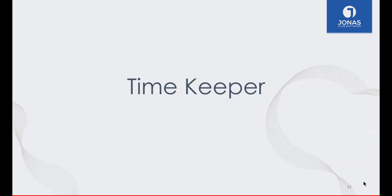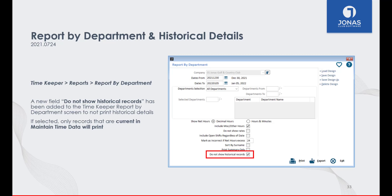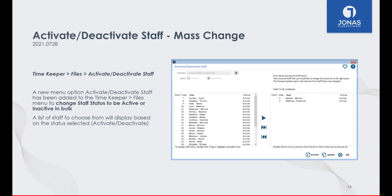Lastly, we have Timekeeper. A new field, Do Not Show Historical Records, has been added to the Report by Department program. If selected, only records that are current and maintain timed data will print on the report. To help clean up and maintain staff accounts, a new menu option — Activate/Deactivate Staff — has been added. This program allows you to change staff status to active or inactive in bulk. A list of staff will display based on the selected status, and the program works similar to other bulk selection programs within Jonas: select staff from the left pane selection list, add them to the right pane to-be-changed list, then preview and update.